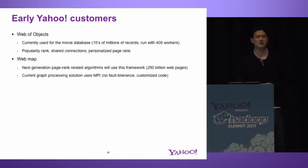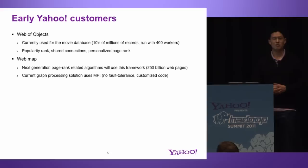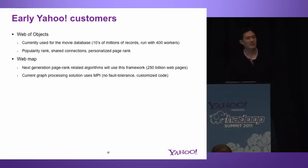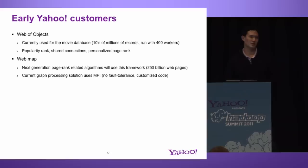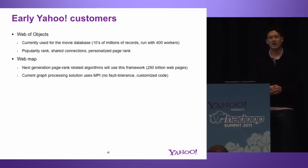We've got some early Yahoo customers. The first team was the Web of Objects team. We've been using it for the movie database with tens of millions of records, running with up to 400 workers. We have about four or five different applications including popularity rank, shared connections, and personalized PageRank, with more being implemented to generate useful features for customers. The other customer is the Web Map team, where we calculate PageRank-type values on web-scale data — 250 billion web pages. The current solution was using MPI and was heavily impacted by the lack of fault tolerance on commodity machines. We're looking forward to having infrastructure that is scalable and fault tolerant.